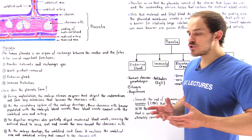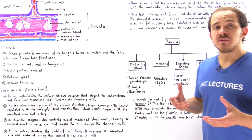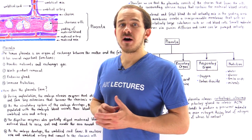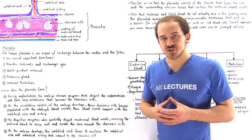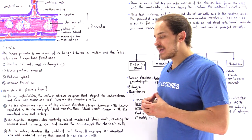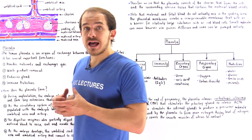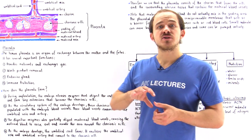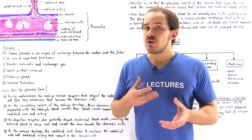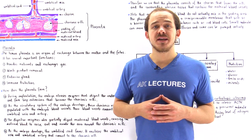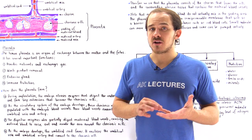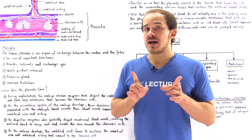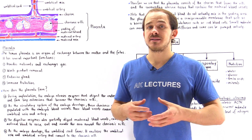During early embryological development, we have a process known as implantation take place. During that process, the blastocyst actually implants itself onto the endometrium, the lining of the uterus. Now as soon as implantation takes place, the trophoblast cells of that blastocyst begin to produce digestive enzymes, and these digestive enzymes are released into the surrounding tissue of the endometrium. Those digestive enzymes begin to break down and digest the vascular and connective tissue found inside that endometrium.